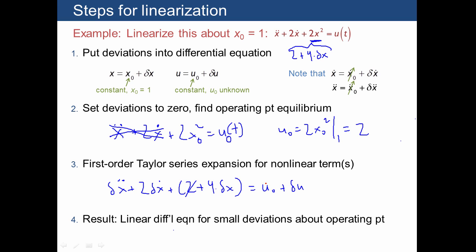So these two terms, which we already solved for, we can actually take out. So now we have a differential equation in terms of the δx's. And this is for near an operating point of x₀ equals 1 and u₀ equals 2.